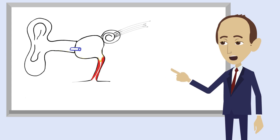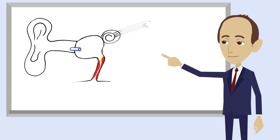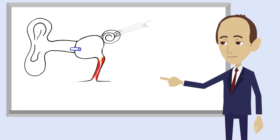Grommets are in effect a way of bypassing the problem whilst we are waiting for things to improve with the eustachian tube.